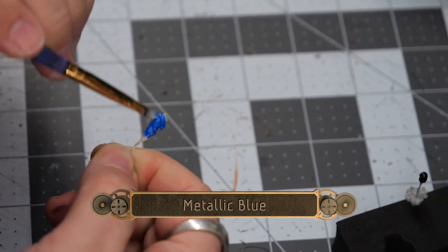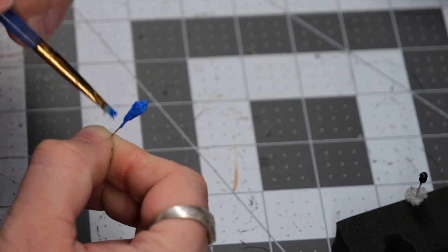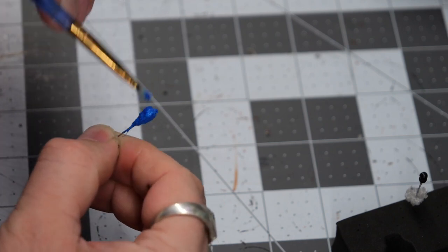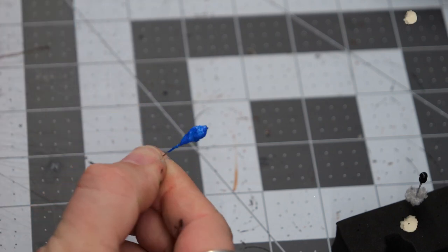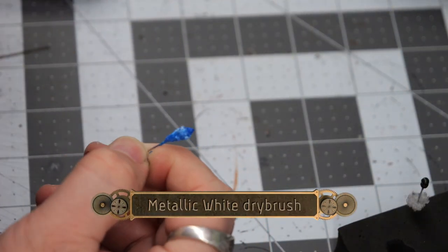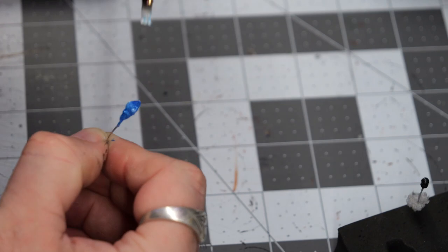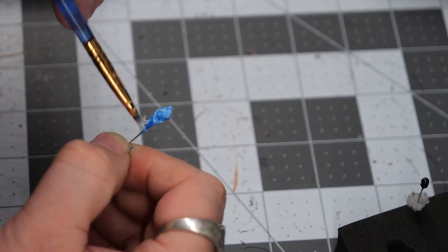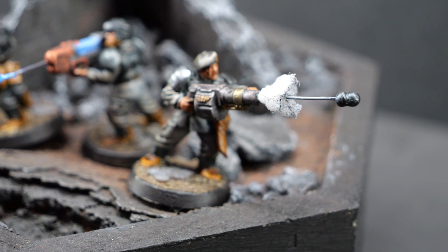Now for the plasma blast, we're going to start with a metallic blue, and then we'll follow it up with a dry brush of metallic white. And here we are with the finished effect.